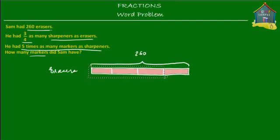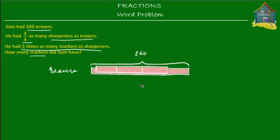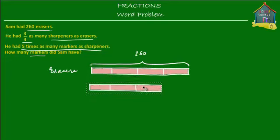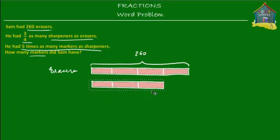So three quarters would be this portion over here — this is how many sharpeners he had. Let's put that down here as sharpeners. So he had three quarters as many sharpeners as erasers.